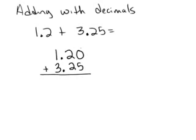And then I go ahead and just add my numbers: 0 plus 5 is 5, 2 plus 2 is 4. Bring my decimals straight down and 1 plus 3 is 4. And there's my answer. So let's go ahead and try another problem.